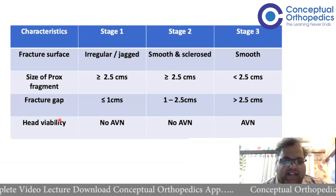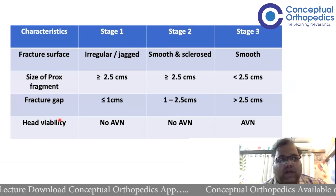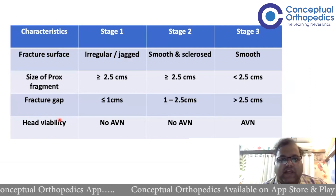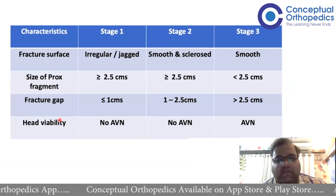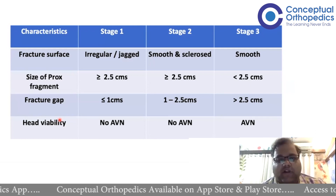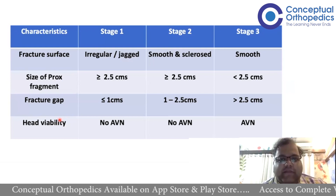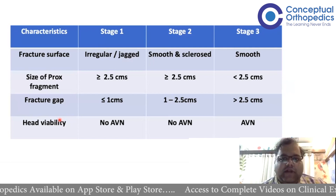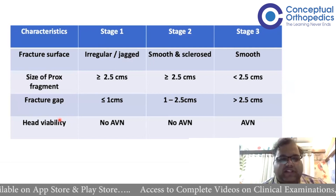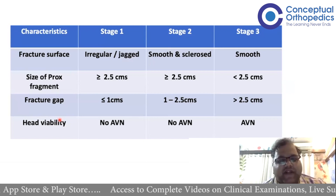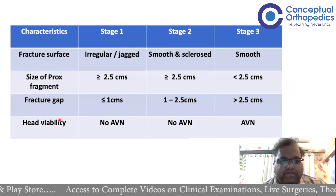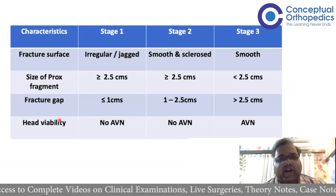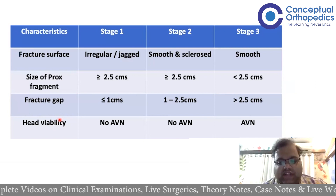Fracture gap: whether it is less than one centimeter or more than 2.5 centimeters. Over a period of time fracture ends get resorbed and the gap widens. If you see a fracture gap more than 2.5 centimeters, we know it is either a pathological fracture or of chronic duration. Head viability: we need an MRI to see whether there is AVN or not. If there is AVN the treatment changes, but if there is no AVN, we could think of salvage options.